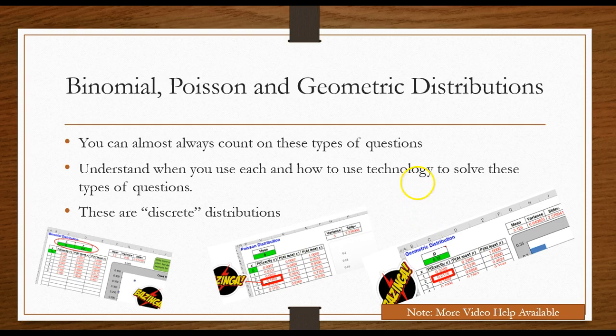The binomial, the Poisson, and the geometric distributions. Hopefully in your undergraduate statistics class you learned about all of these. And you can almost always count on these types of questions.